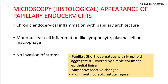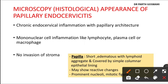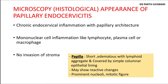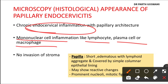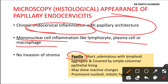Now let's look at the microscopic or histological appearance of papillary endocervicitis. If a woman presents with abnormal vaginal bleeding or pain during intercourse and a biopsy is taken, microscopic examination will mainly show chronic inflammation of the endocervix consisting of mononuclear cells — lymphocytes, plasma cells, and macrophages. Neutrophils can also occasionally be present. Additionally, papillary architecture is present, and you can observe papillae in the microscopic appearance, which I will show in the next slide.